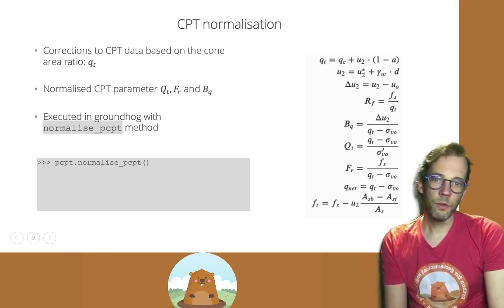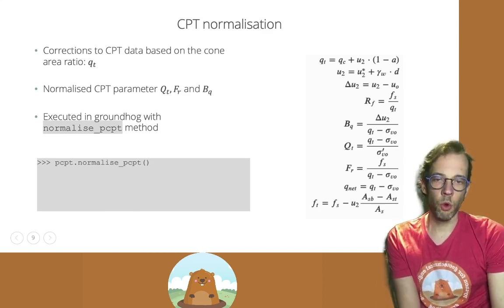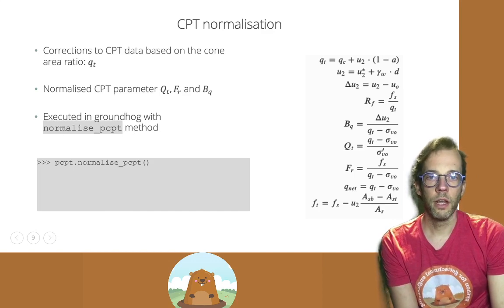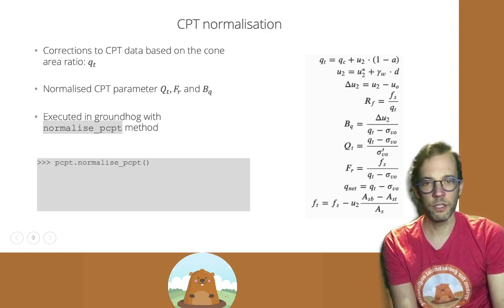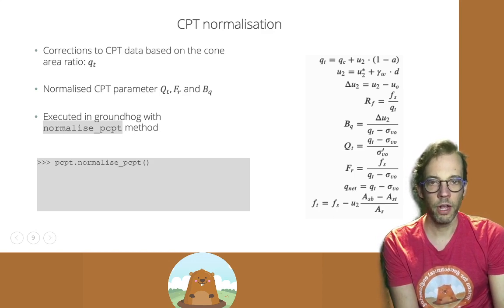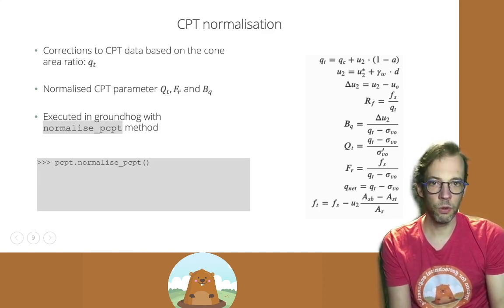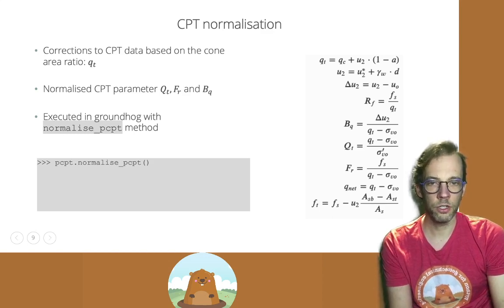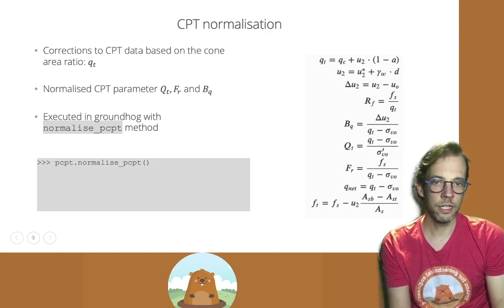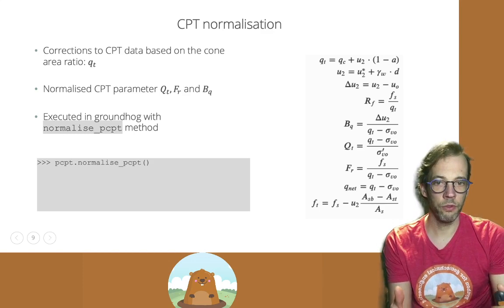The next thing we need to do is we need to correct and normalize the CPT data based on the cone properties. Especially the area ratio is important there, as I mentioned before. And QT total cone resistance includes the correction for that area ratio.